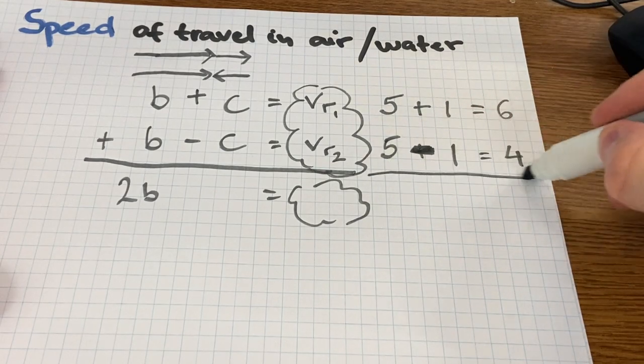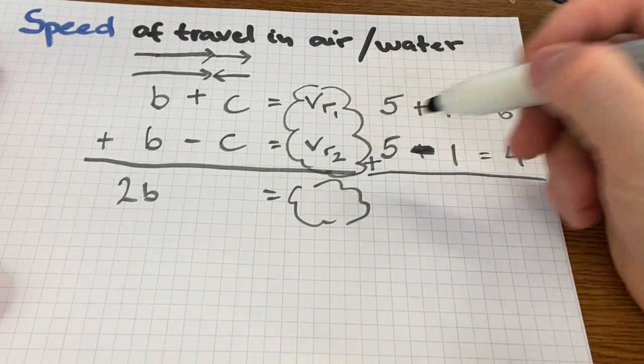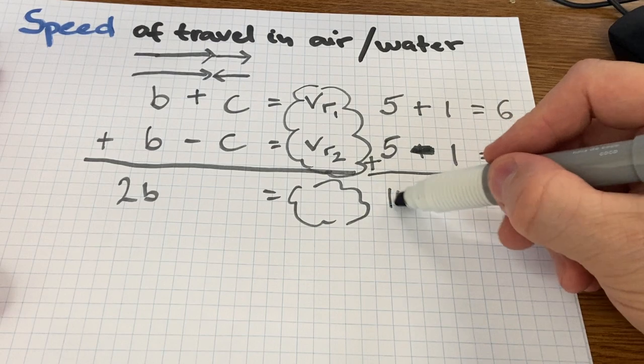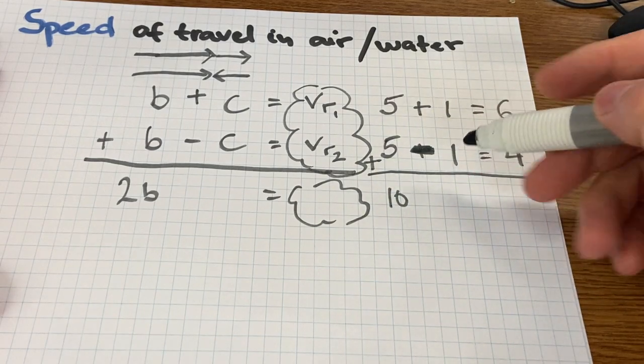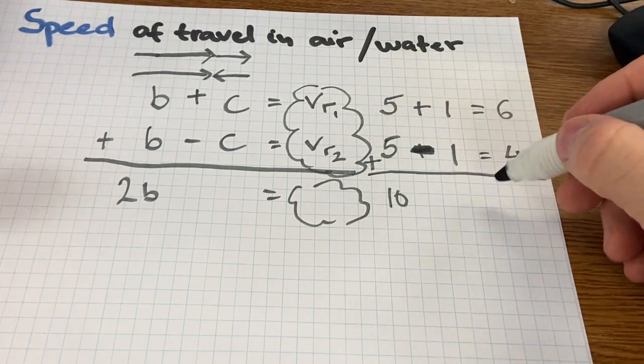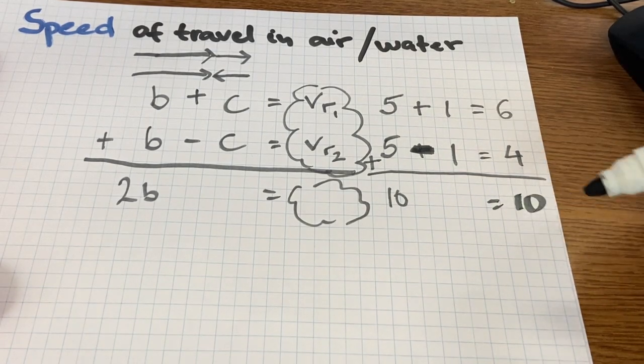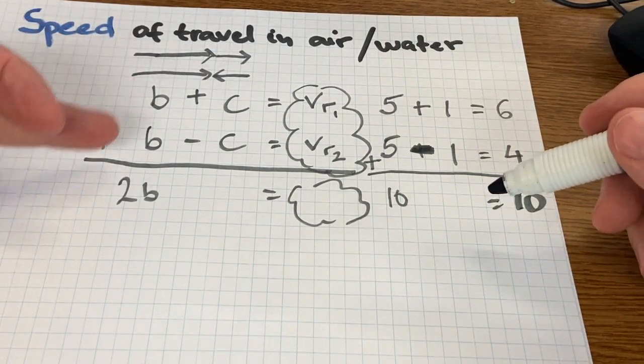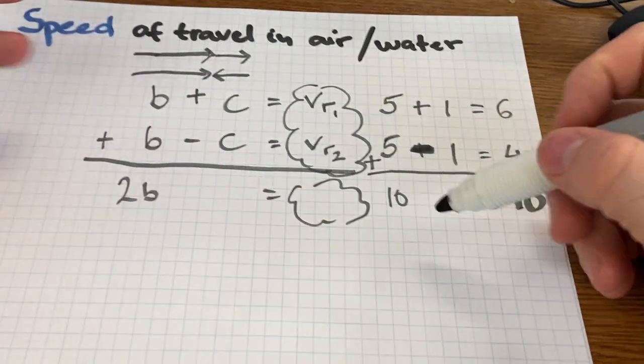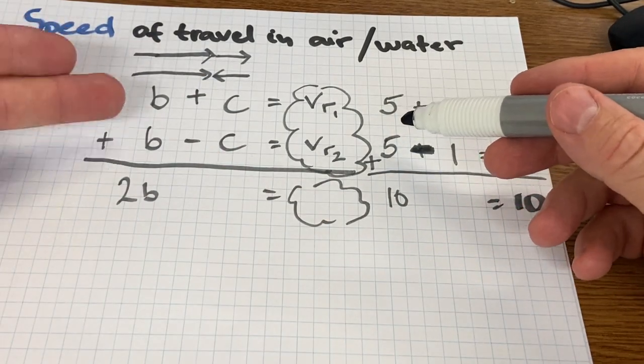Adding these two equations together, I can put a plus sign here. 5 plus 5 is 10, plus 1 plus minus 1 is nothing. I'm going to write nothing there. Equals 6 plus 4 is also 10. 10 does equal 10.